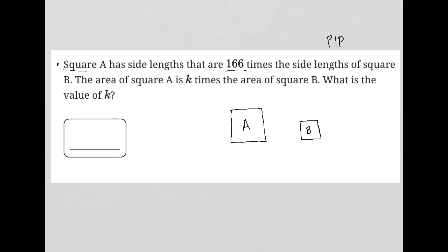And I'm going to say the side lengths of square B are 2. All right, so all these are 2. So if that was the case, that means that the side lengths of square A would be 2 times 166, which makes them 332.